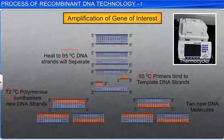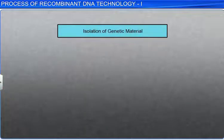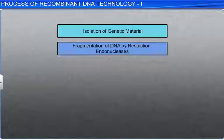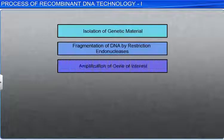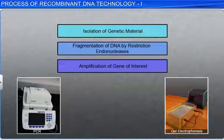These first three steps — isolation of DNA, fragmentation by restriction endonuclease, and amplification of the gene of interest — are important steps in recombinant DNA technology that are carried out using specific techniques.